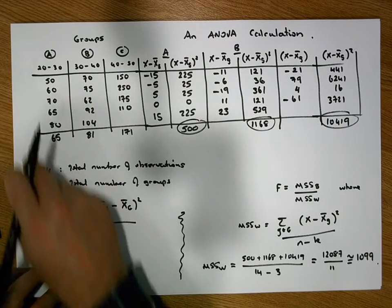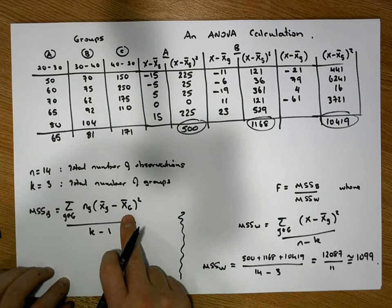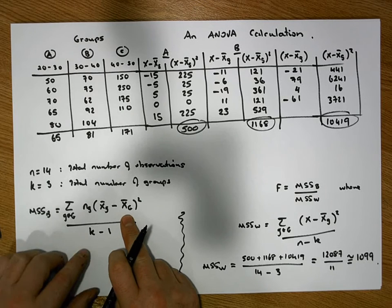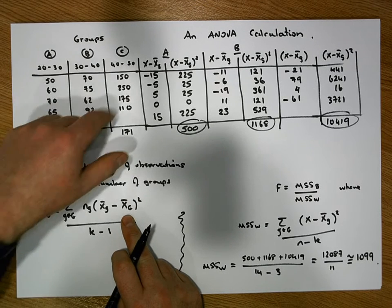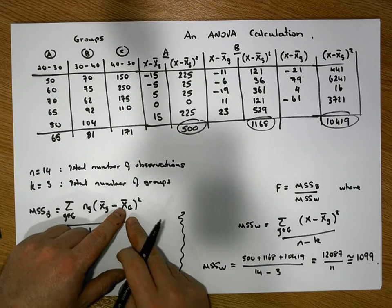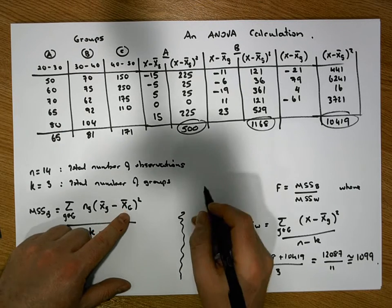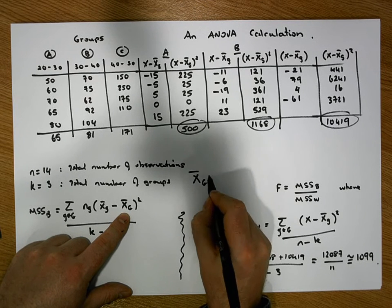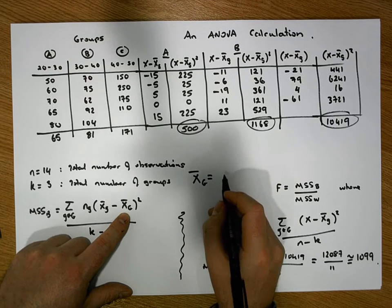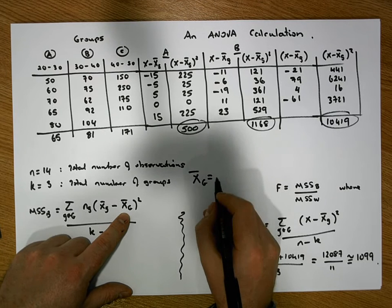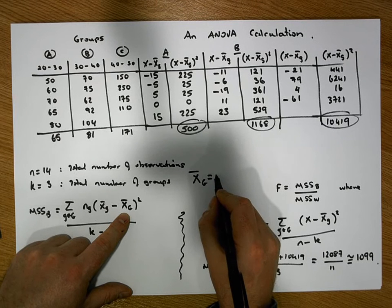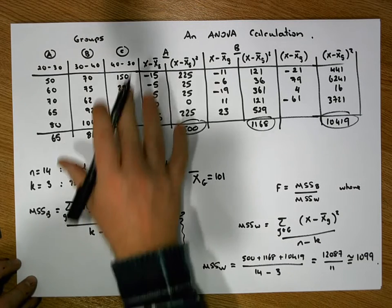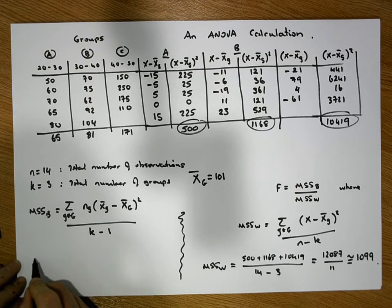We calculate the average of all of our values together to give us our global mean. When we calculate the average of these particular values we get a global mean x-bar-g approximately equal to 100.9286, which is approximately equal to 101. This is our global mean.